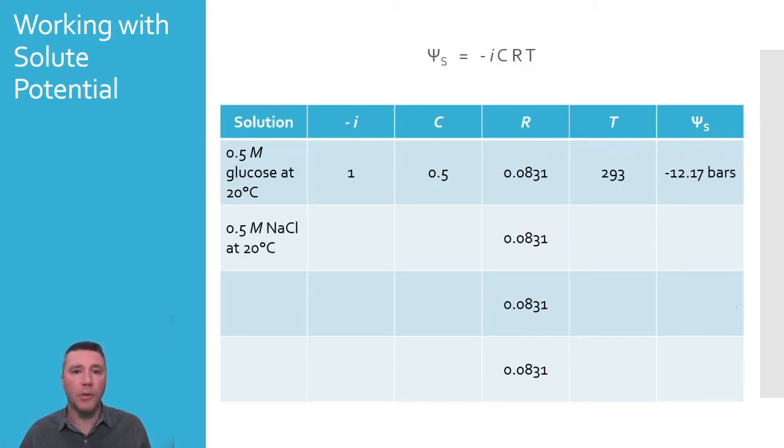The second solution is a 0.5 molar sodium chloride solution at 20 degrees Celsius. Concentration is the same and temperature is the same. But what's different is that sodium chloride ionizes into two particles in solution. Therefore, i is equal to 2. This changes the resulting solute potential to be negative 24.35 bars. The sodium chloride solution has double the number of particles in solution, meaning that it is hypertonic to the glucose solution.